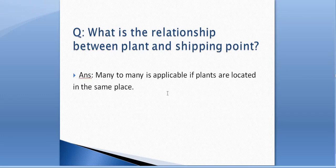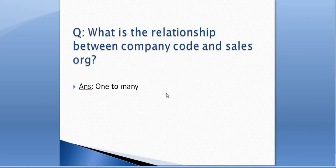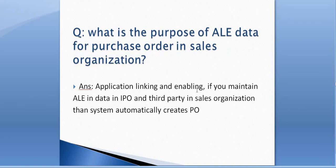What is the relation between a plant and a shipping point? It is one-to-many, but in specific scenarios where clients have multiple plants located in the same place, it can be many-to-many. What is the relation between company code and sales organization? It is also one-to-many, because one company code can have multiple sales organizations but one sales organization cannot be assigned to multiple company codes.